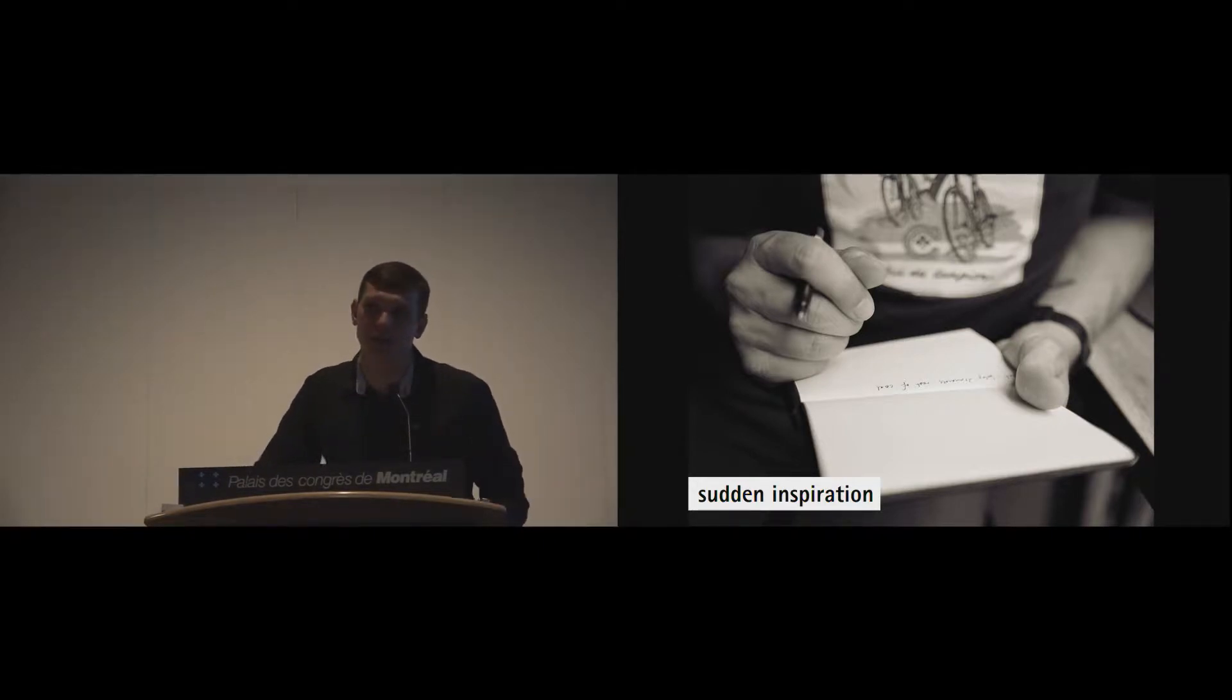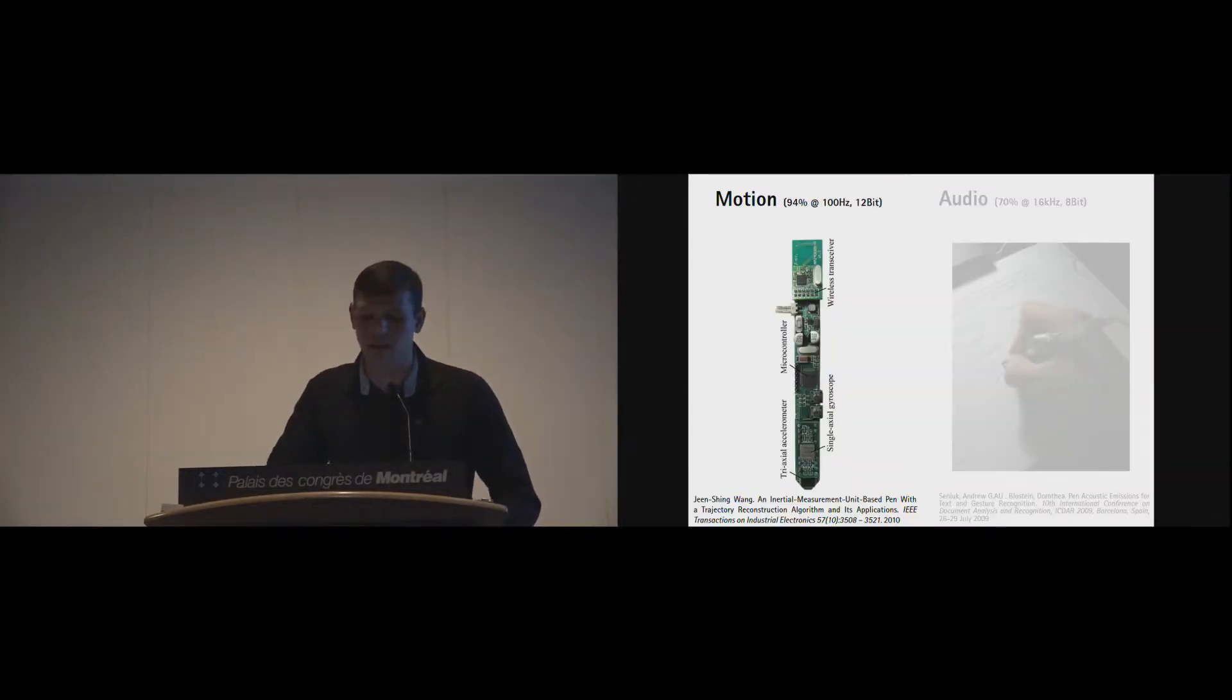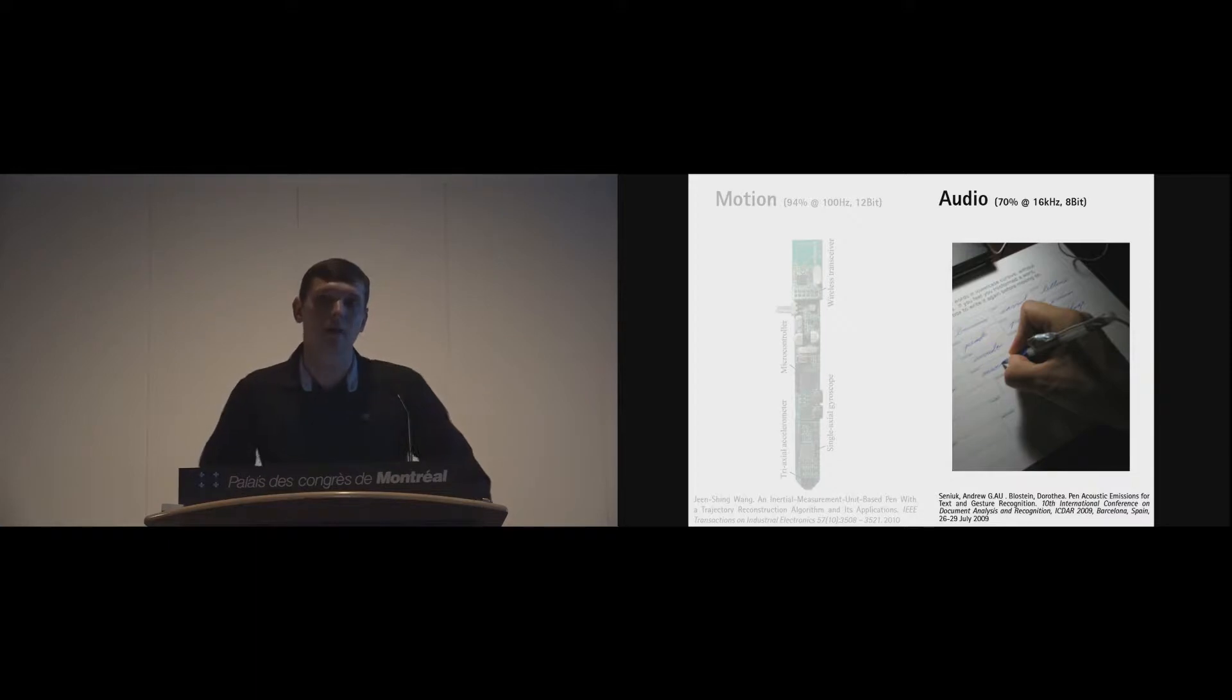But what if we have some sudden inspiration? We may want to write down some small information on a piece of paper, like a telephone number. In that case, special paper is not available, and clipping a base station on a small piece of paper is too uncomfortable. That's why researchers recently focused on applying other sensors, such as motion. Wang showed in 2010 that he can achieve on handwritten digits with given writing instructions, accuracies of over 94%. For audio, Sceno showed in 2009 that he can achieve accuracies of 70% on audio data from a microphone simply taped on a pen shaft.